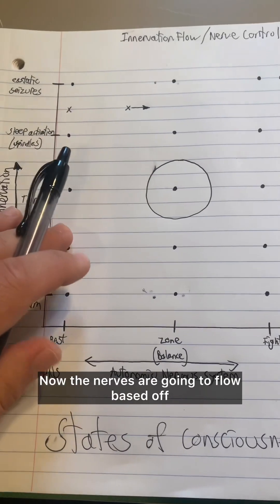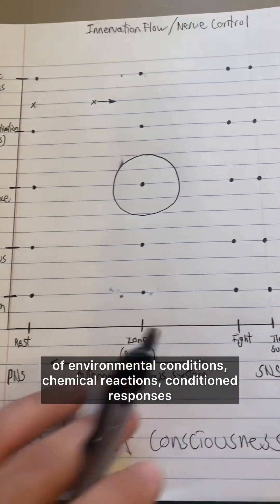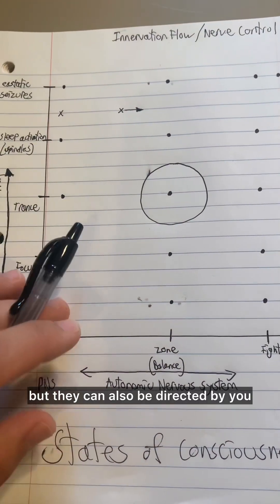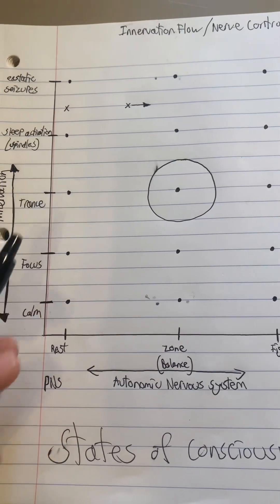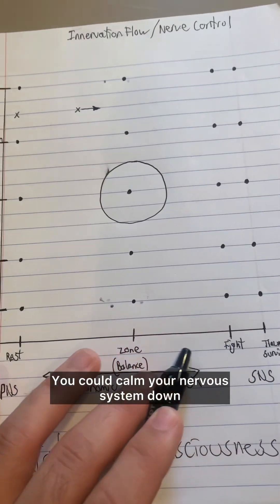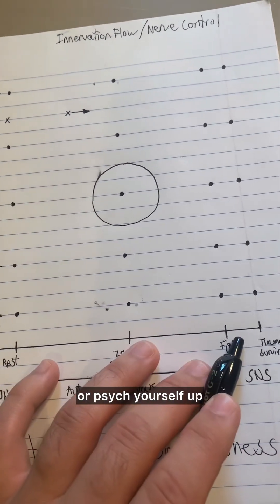The nerves are going to flow based off of environmental conditions, chemical reactions, conditioned responses, reflexes to situations. But they can also be directed by you. You can choose to focus on things. You could calm your nervous system down, or you can increase it. You can hype yourself up or psych yourself up.